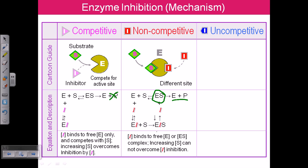This inactive state can be represented as EIS or EI, and no further product production can be established. The general note: the inhibitor binds to free enzyme or enzyme-substrate complex, and increasing substrate cannot overcome the inhibition by this kind of inhibitor.